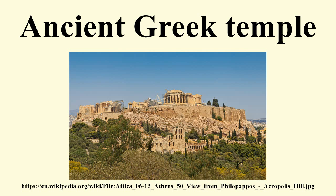The opisthodomos's existence is necessitated entirely by aesthetic considerations. To maintain the consistency of the peripteral temple and ensure its viewability from all sides, the execution of the front has to be repeated at the rear. A restricted space, the aditon, may be included at the far end of the cella, backing onto the opisthodomos. The complex formed by the naos, pronaus, opisthodomos, and possibly the aditon is enclosed on all four sides by the peristasis, usually a single row, rarely a double one, of columns.